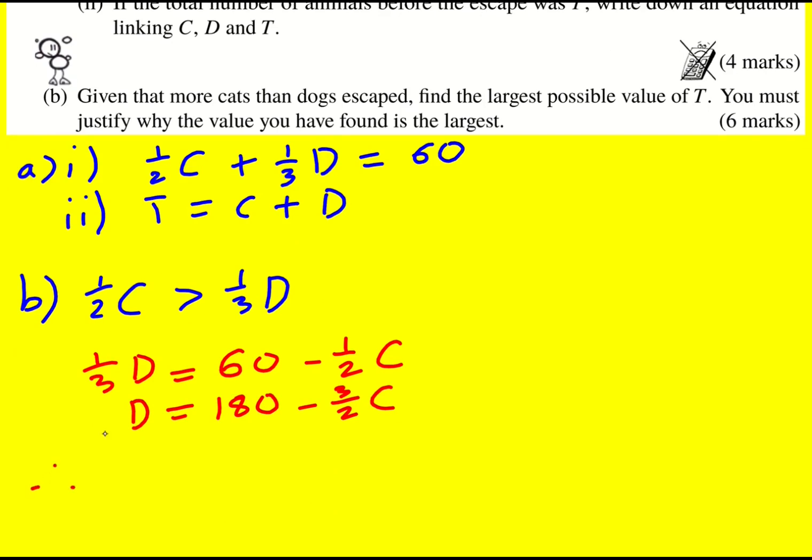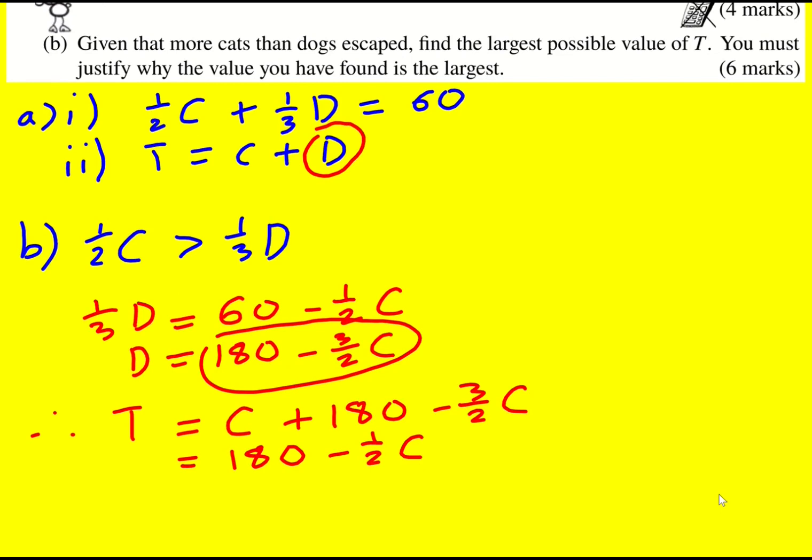And now I can basically replace this by this because they're both equal to D. So T is equal to C plus 180 minus three-halves C, which is 180 minus one-half C. And so we're now trying to maximize T, remember? And so we kind of want to make C as small as possible, but we've got this condition.